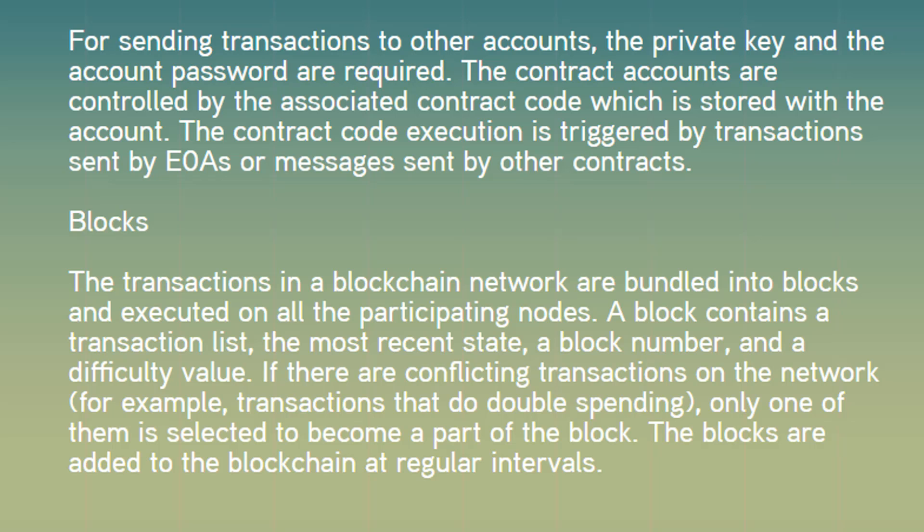Blocks. The transactions in a blockchain network are bundled into blocks and executed on all the participant nodes. A block contains a transaction list, the most recent state, a block number, and a difficulty value. If there are conflicting transactions on the network — for example, transactions that do double spending — only one of them is selected to become a part of the block. The blocks are added to the blockchain at regular intervals.